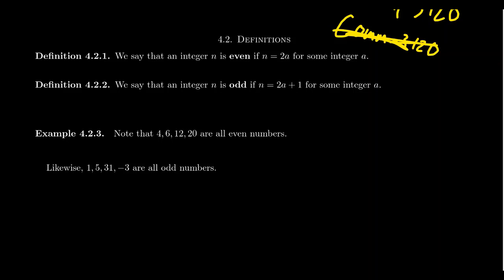So the first thing to discuss in this transition to advanced mathematics is the ever-important meaning of a mathematical definition. In mathematics, it is of the utmost importance that our language be precise and unambiguous. If we are to craft sound and logical, valid proofs, then we can only do this if we're certain of what we're talking about.